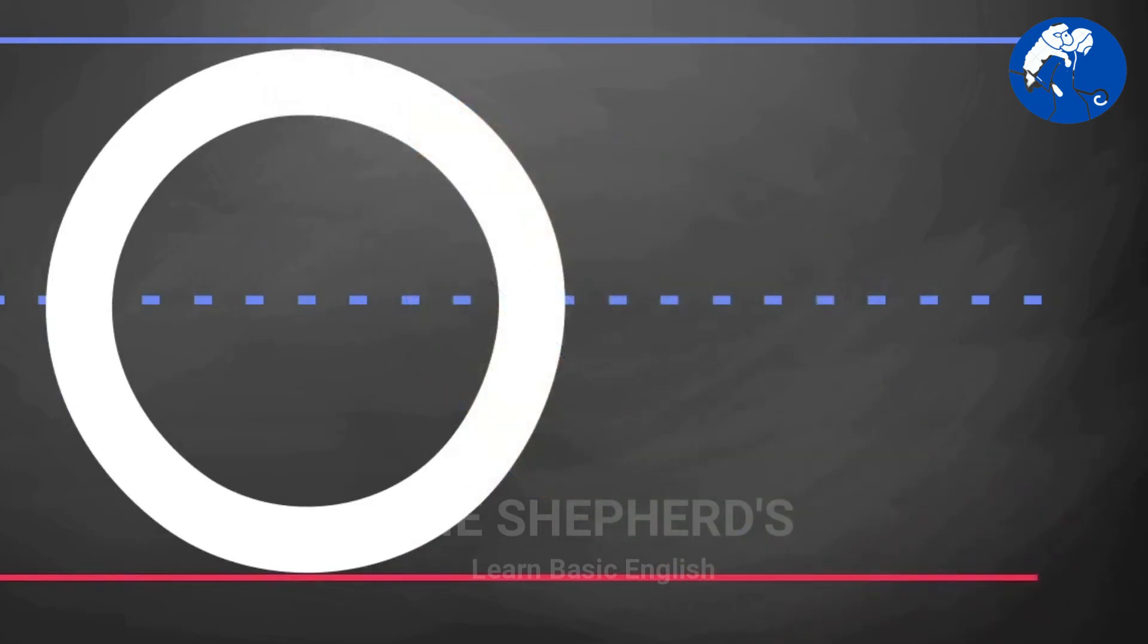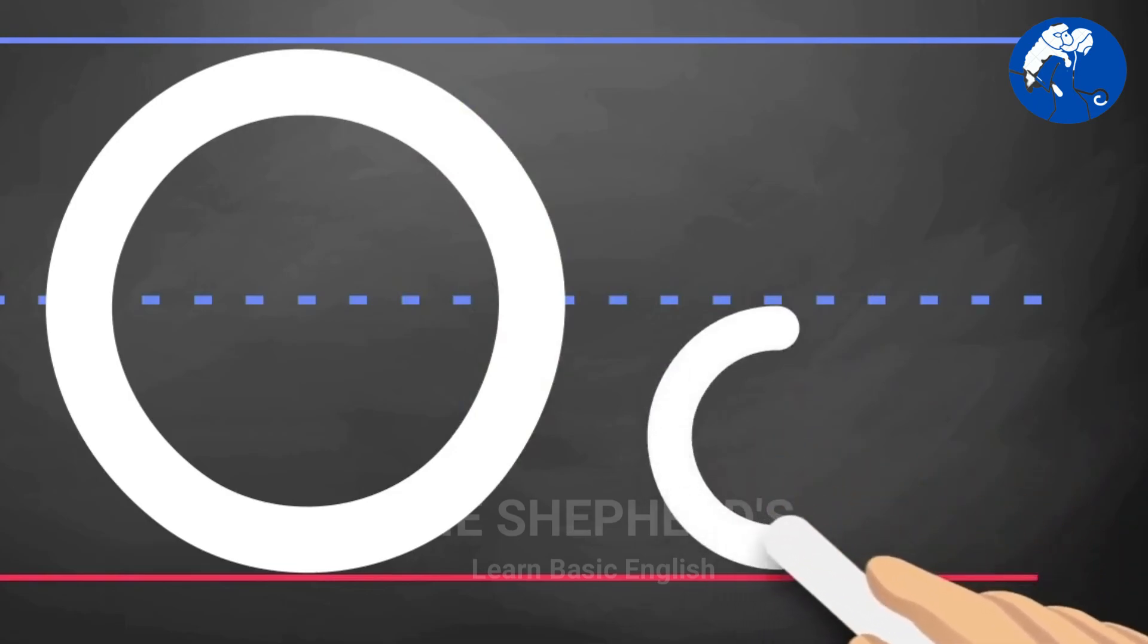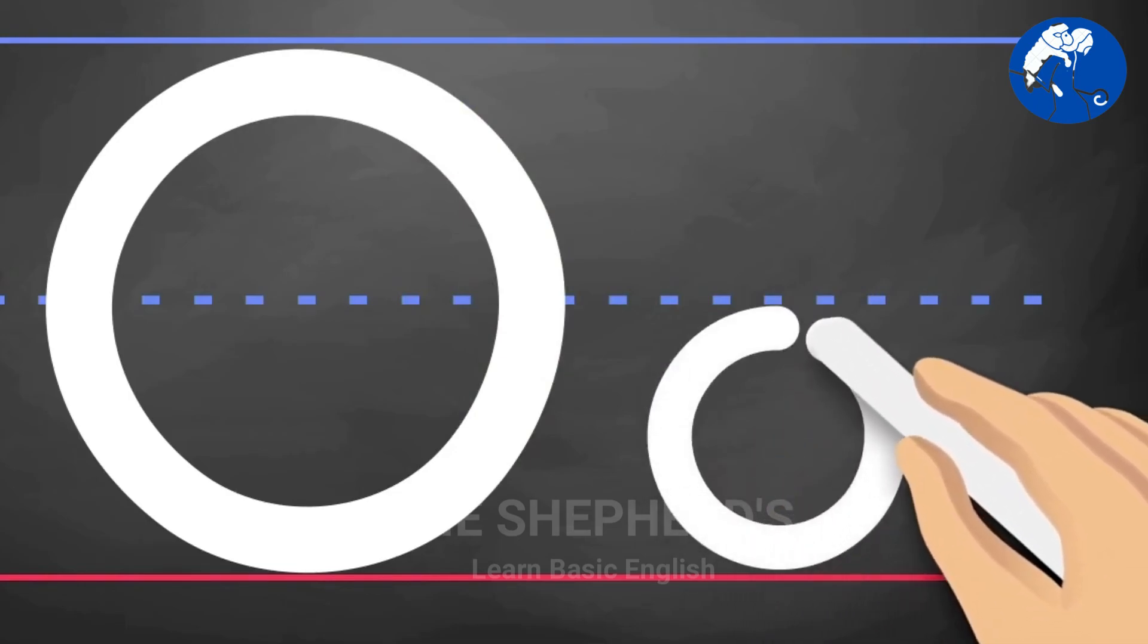Lowercase O: Start from the middle, pull back, around, up, and close.